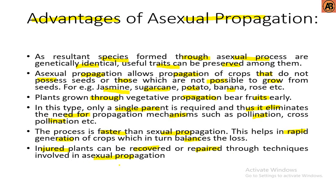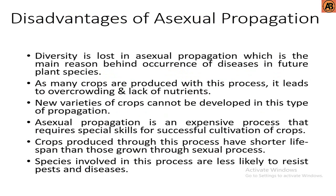Now the disadvantages of asexual propagation: diversity is lost in asexual propagation, which is the main reason behind the occurrence of diseases in future plant species. As many crops are produced with this process, it leads to overcrowding and lack of nutrients. New varieties of crops cannot be developed in this type of propagation.